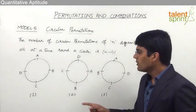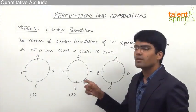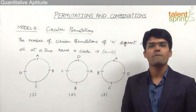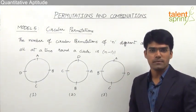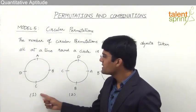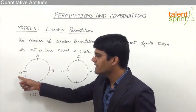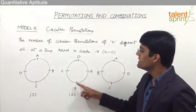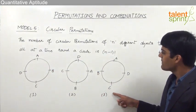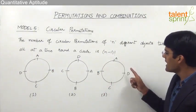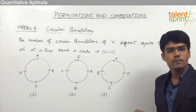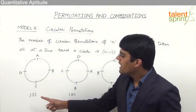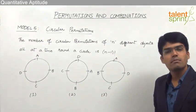Consider three circular arrangements of four persons A, B, C, and D around a circular table. The first arrangement has A, B, C, D in four positions. The second arrangement has D, A, B, C. Now if you try to compare, there is no difference between arrangement number one and arrangement number two.